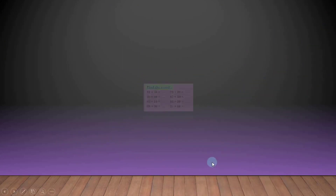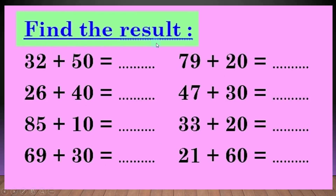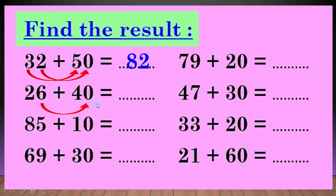ناخد سؤال كمان: find the result - يعني اوجد الناتج، يعني solve the problem. المسألة horizontal بالعرض - عادي ولا يهمني. احنا اتفقنا ان الـ ones مع الـ ones والـ tens مع الـ tens. المسألة: 32 plus 50. 2 plus 0 equal 2. 3 plus 5: بعد 5، 6، 7، 8. يبقى الانسر طلع 82.